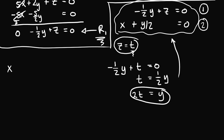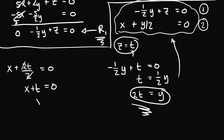For the second equation, x plus y over two — where y is 2t — gives x plus 2t divided by 2 equals zero. Since 2 divided by 2 is 1, we have x plus t equals zero. Solving for x gives x equals negative t. The parametric representation of the solution set for this system is x equals negative t, y equals 2t, and z equals t.